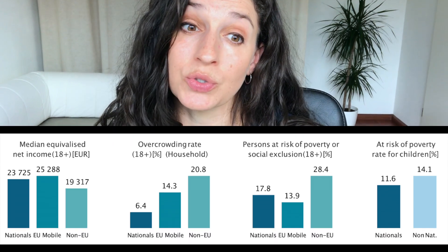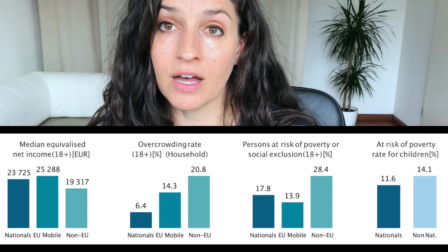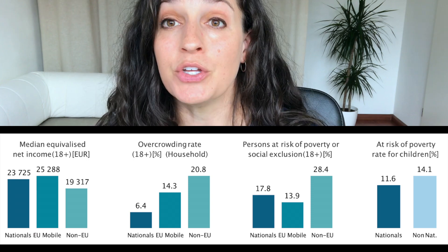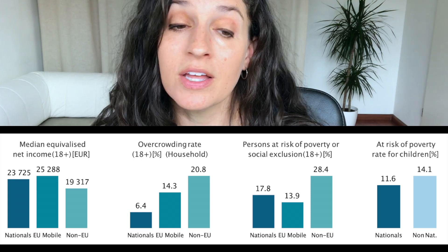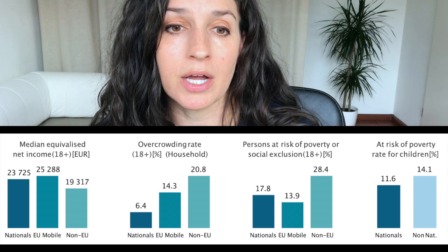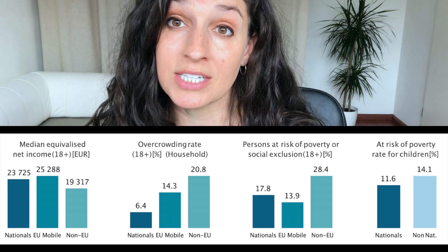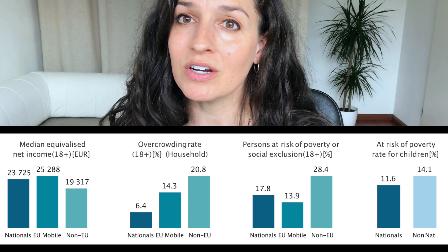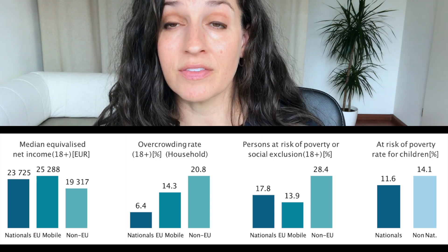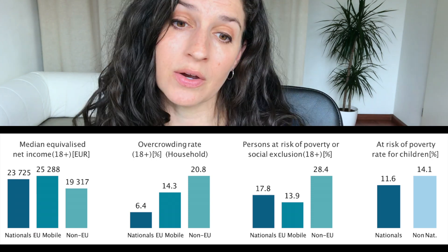Now let's look at some indicators of social inclusion. First, income: we can see the difference between German nationals, European immigrants, and immigrants from outside the EU. European immigrants have a slightly higher net income than nationals, though it's quite close. Non-EU nationals are a bit behind both, but the differences aren't extremely high — especially compared to the EU in general, where the gaps in other countries can be larger.